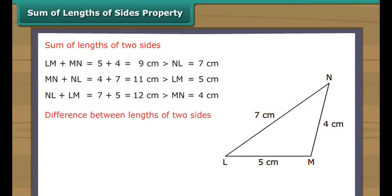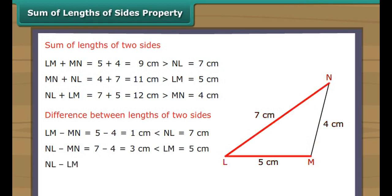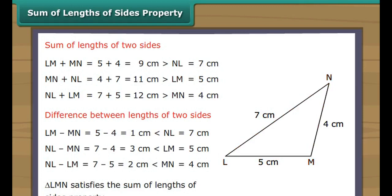Now let us look at the difference between the lengths of two sides. LM minus MN equals 5 minus 4 equals 1 cm, which is smaller than NL (7 cm). NL minus MN equals 7 minus 4 equals 3 cm, which is smaller than LM (5 cm). NL minus LM equals 7 minus 5 equals 2 cm, which is smaller than MN (4 cm). Triangle LMN satisfies the sum of lengths of sides property.